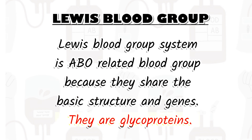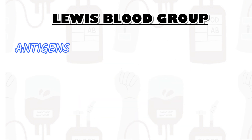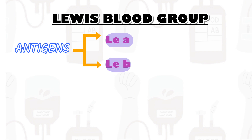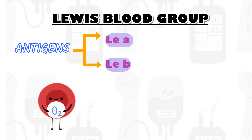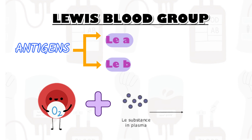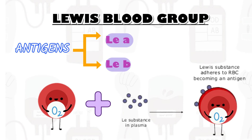Lewis antigens are glycoproteins. There are several Lewis antigens, but the two primary ones of concern are Le-a and Le-b. Antigens are not produced by RBCs themselves — they are adsorbed onto them from plasma. They are seen in all secretions and produced by exocrine epithelial cells.